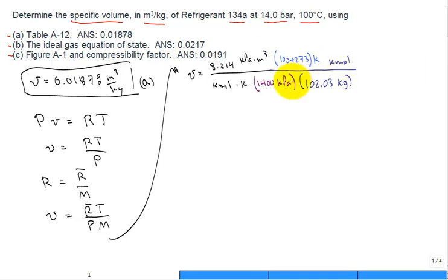I put the units here to show that they cancel. So kilomoles cancel with kilomole, kelvin with kelvin, kilopascal with kilopascal. And we're left with the specific volume for ideal gas, 0.0217 meter cubed per kilogram. And that's our answer for part B.